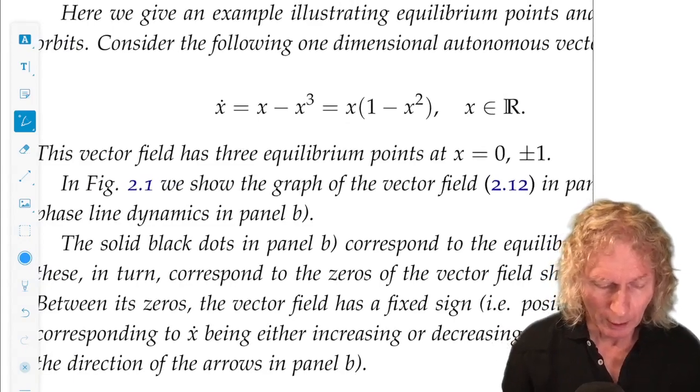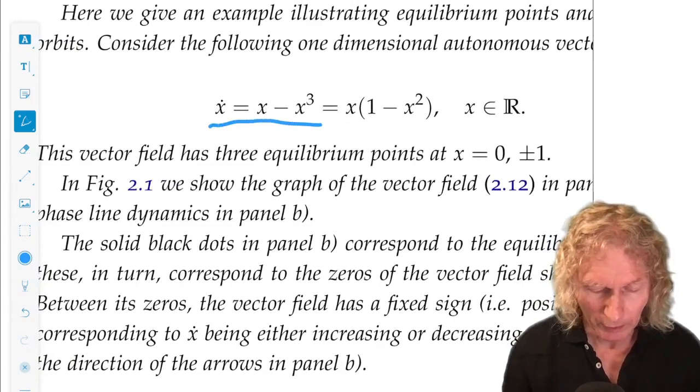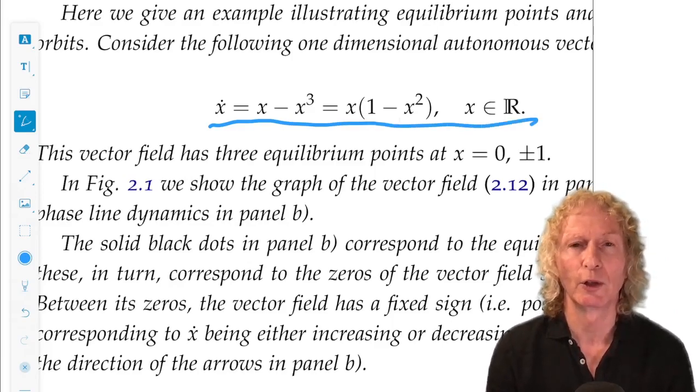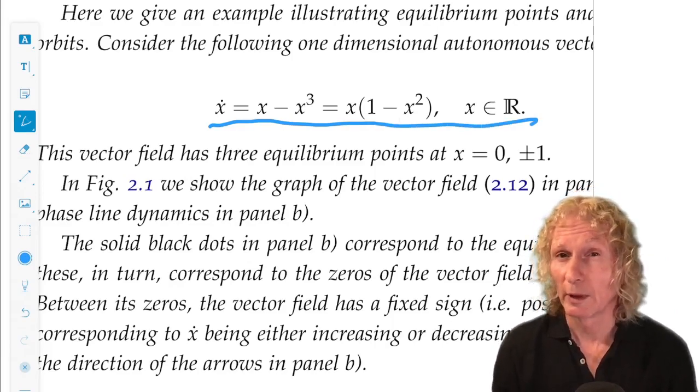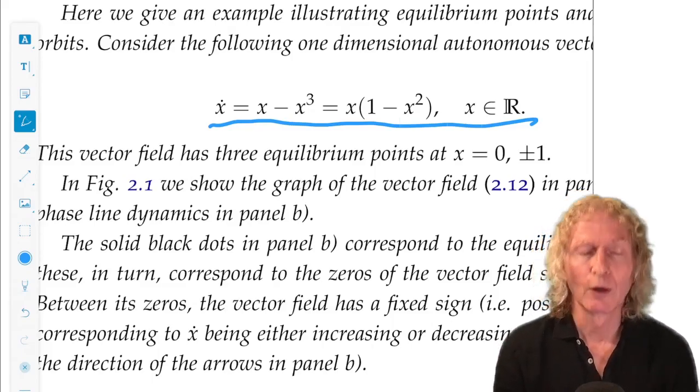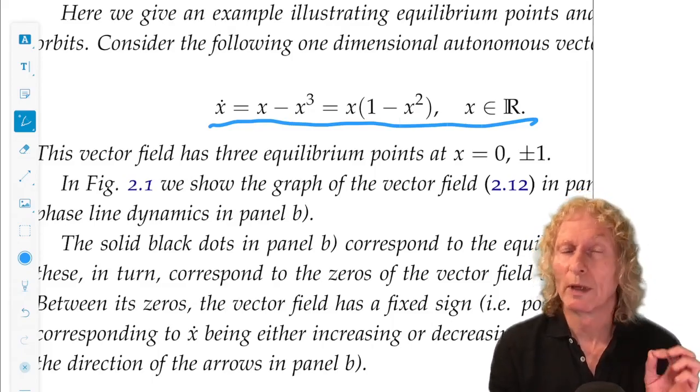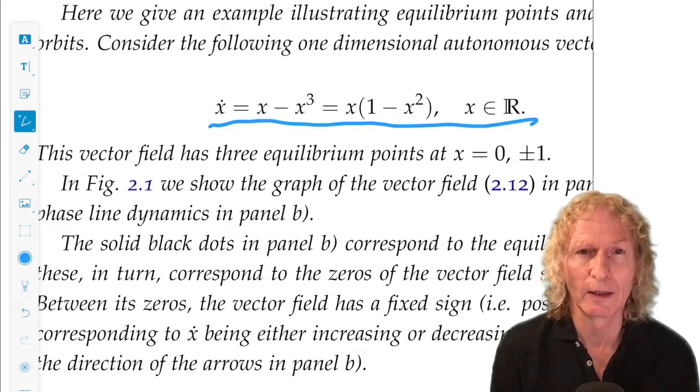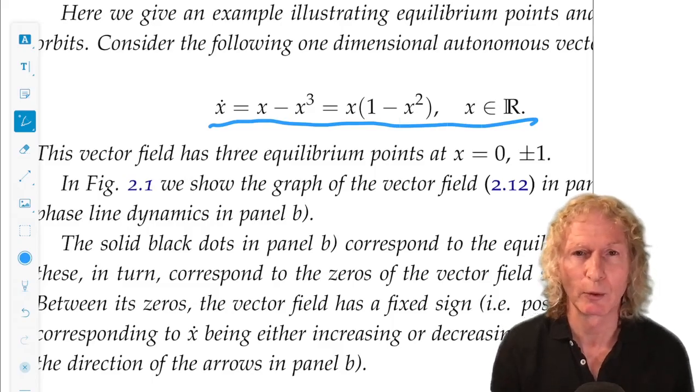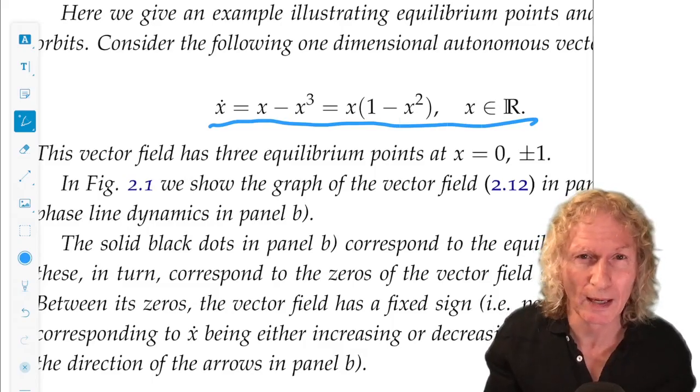Here's the ODE that I'm going to consider. It's one-dimensional autonomous, x dot equals x minus x cubed. You notice I don't have an initial condition written down, there's a point behind that. We know that we have a representation of the solution. We derive that in Chapter 1 in an integral form, that we could do that.